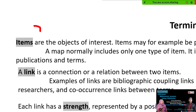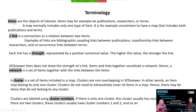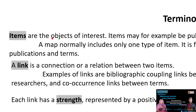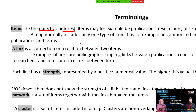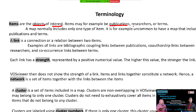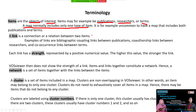There are some terms we must understand before starting practically. The first term is 'item.' In VOSviewer, items are the objects of interest — for example, items may be publications, researchers, or terms. A map normally includes only one type of item; it is not common to have a map that includes both publications and terms together.